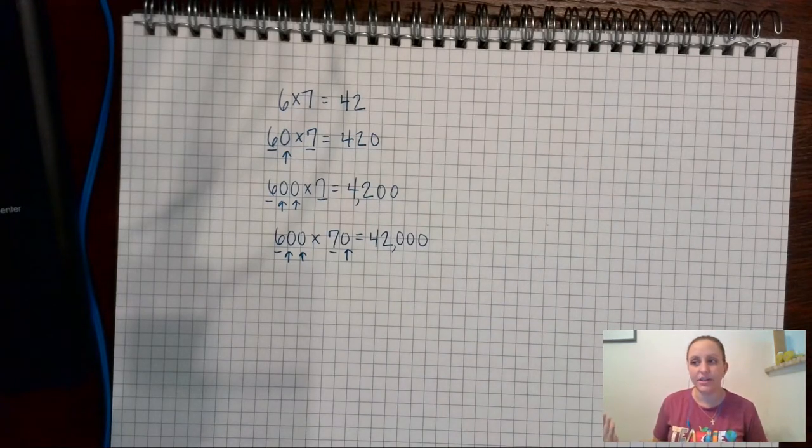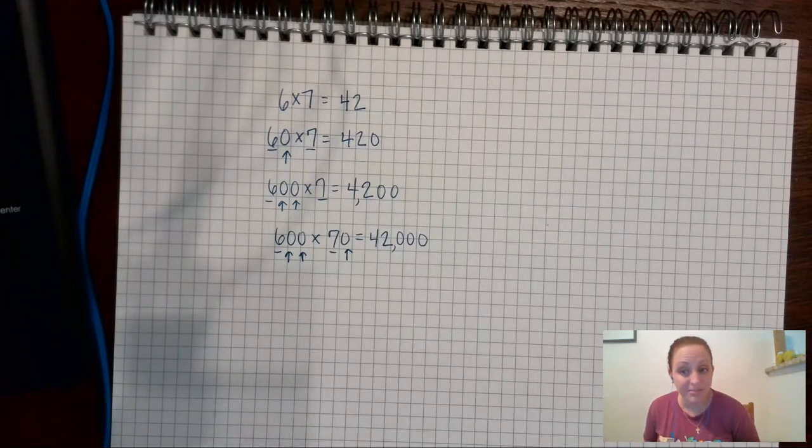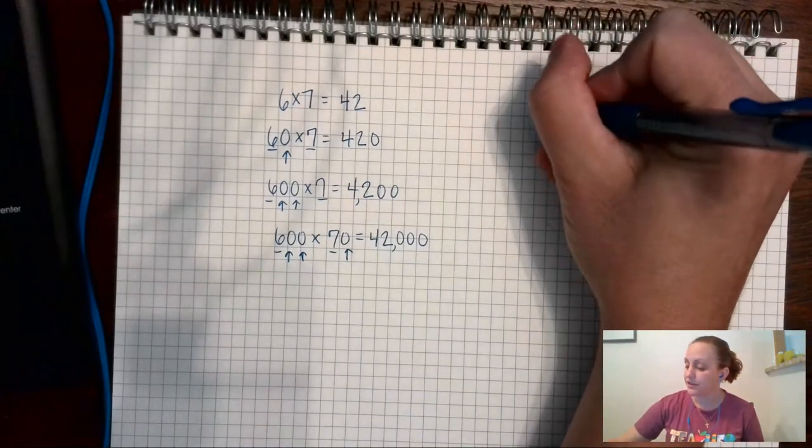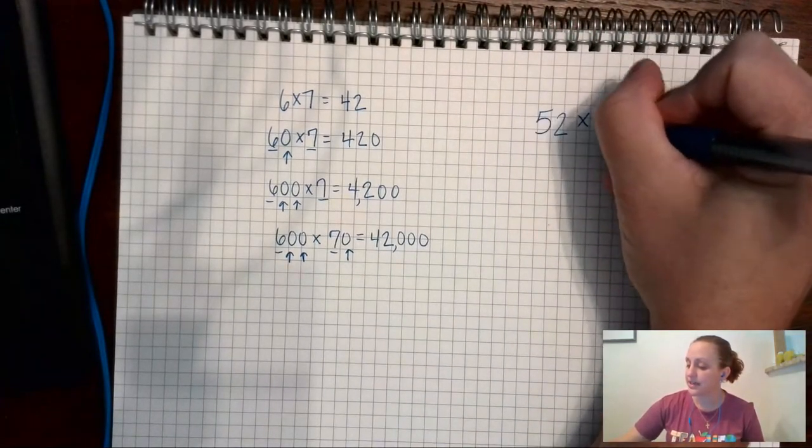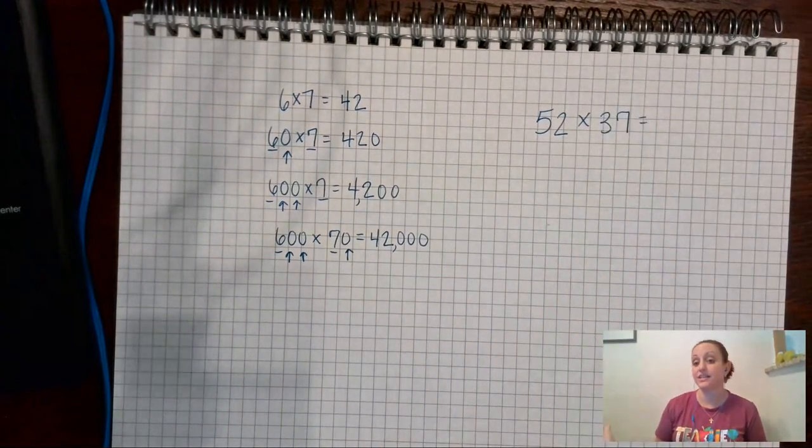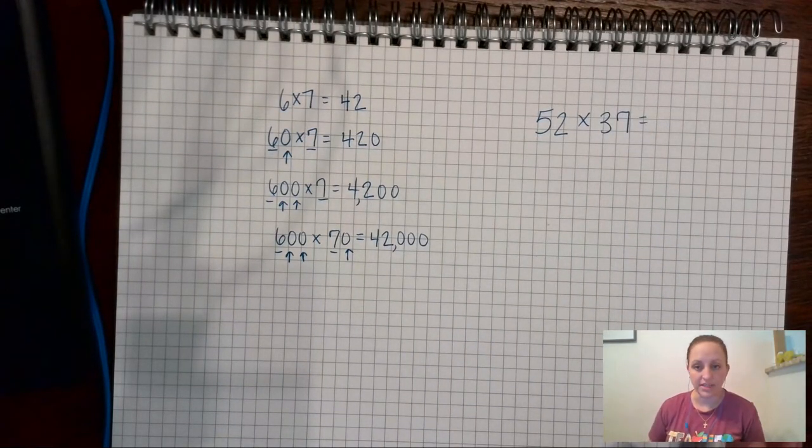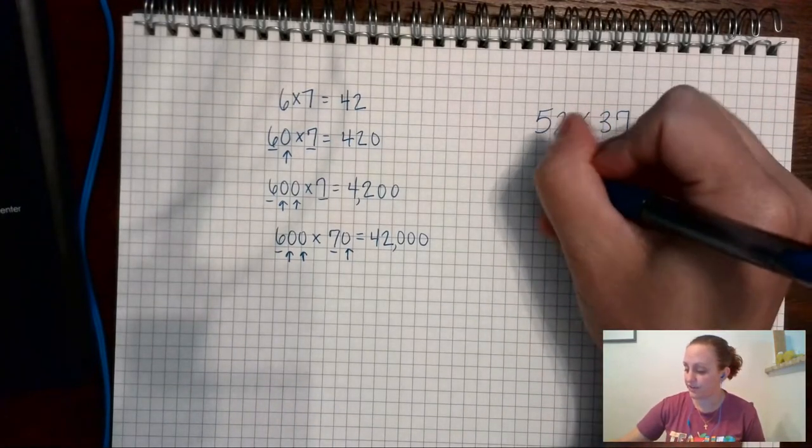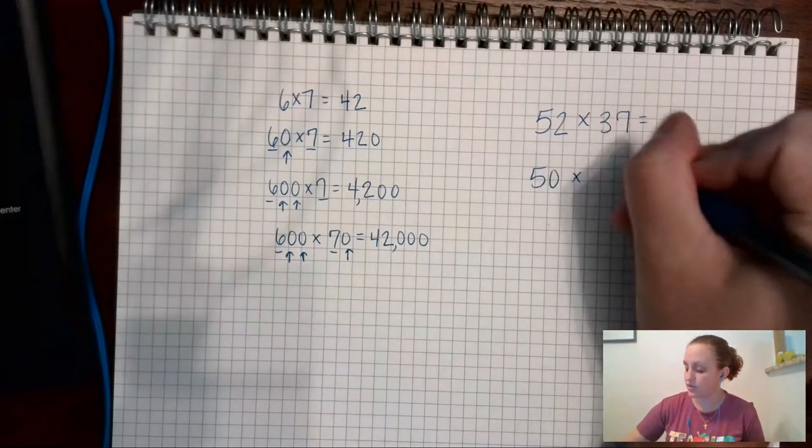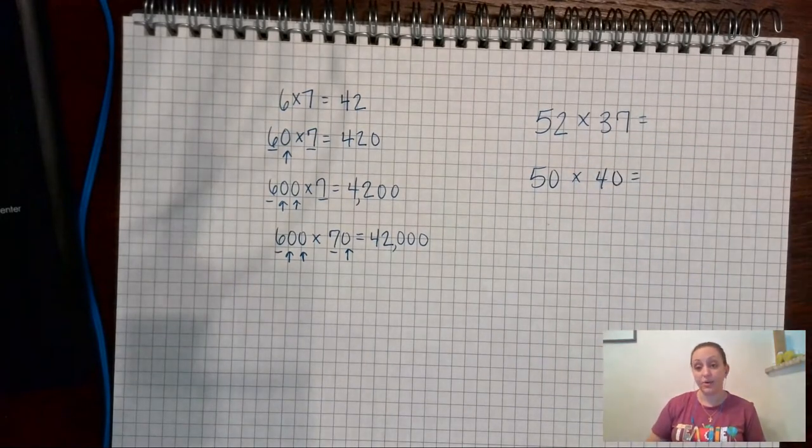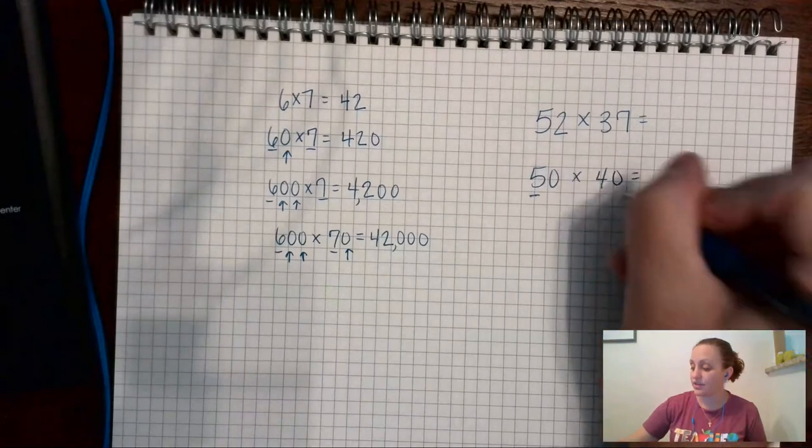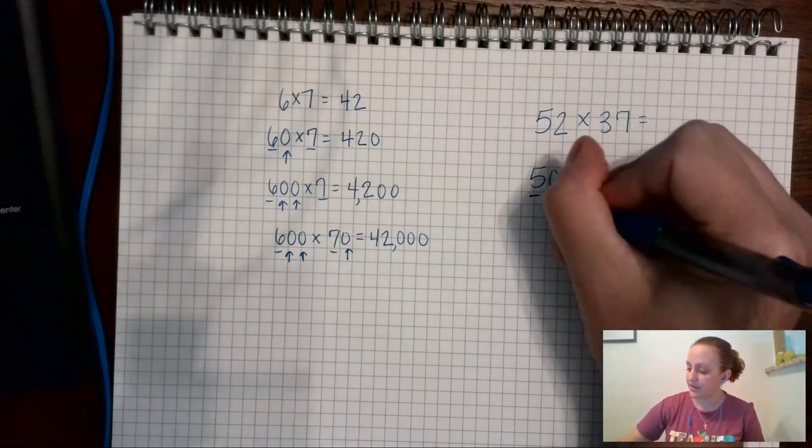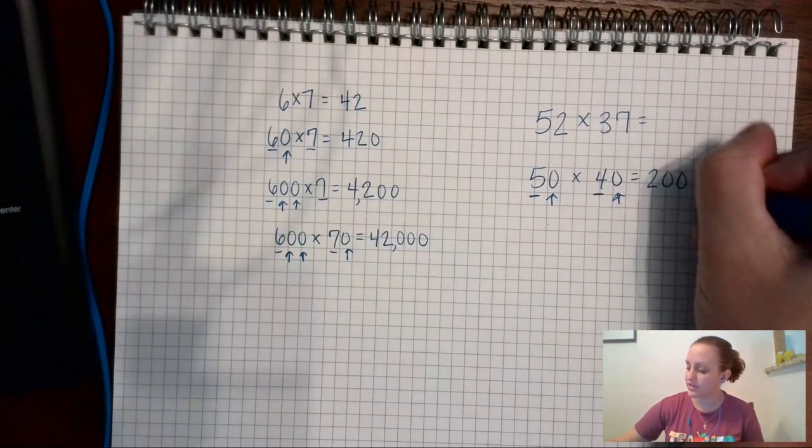Okay so let's say I see 52 times 37 and I want to find an estimate for 52 times 37. Well I'm going to round these to the nearest 10 so this is going to go to 50 and that's going to go to 40. And now I can do quick estimation in my head. 5 times 4 is 20 and then I have two zeros so I have to add two zeros to the end. So 52 times 47 is about 2000.